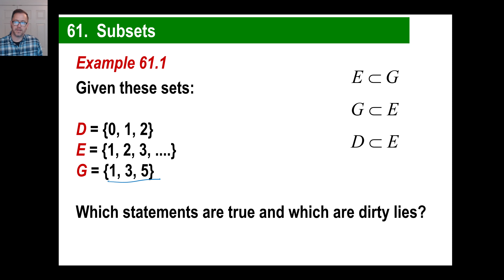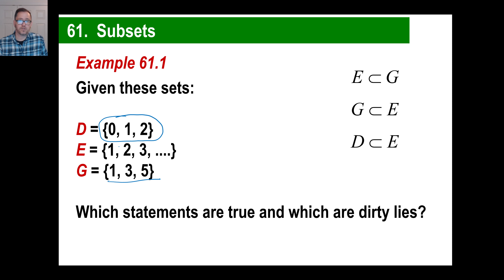How about D being a subset of E? Let's take a look at D. Does D slide easily into E? Well, 1 and 2 are fine — that works. But the 0 that is part of set D is not a part of set E. So you'd have to say that is false.